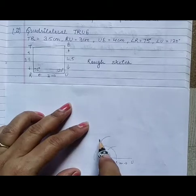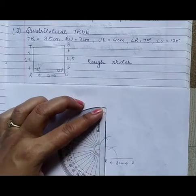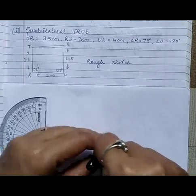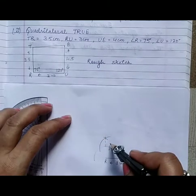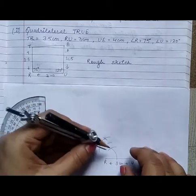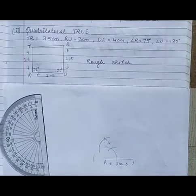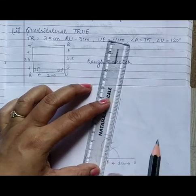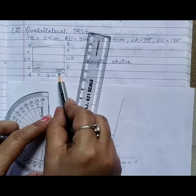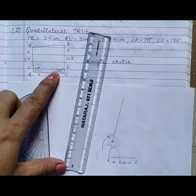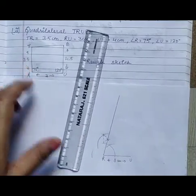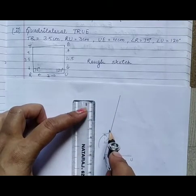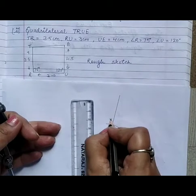This is 120, 90. Now I will bisect this part. Here this is 75 degrees. Now I have to draw angle 120 degrees. Before making this angle, let us cut an arc of 3.5 cm to make point T. This is 3.5 cm, this point is T.